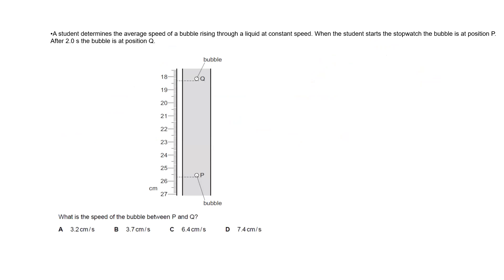In this next question, a student determines the average speed of a bubble rising through a liquid. When the student starts the stopwatch, the bubble is at position P; when he stops after 2 seconds, the bubble is at position Q. The positions are at 25.7 centimeters and 18.3 centimeters. The question is: what is the speed of the bubble between P and Q? Average speed is distance travelled divided by time taken.